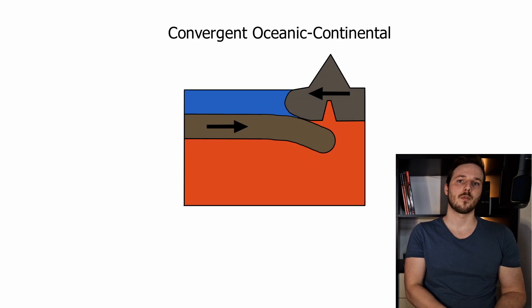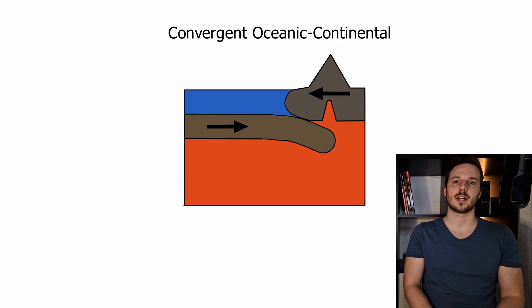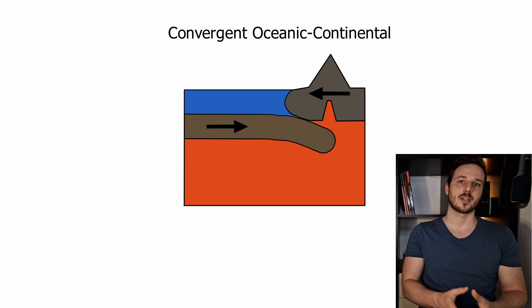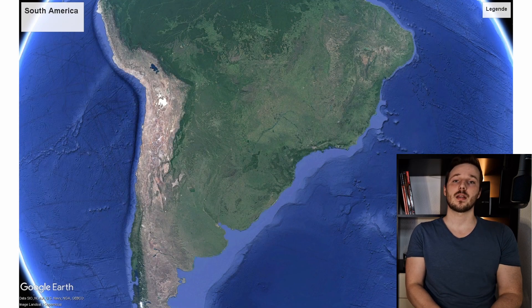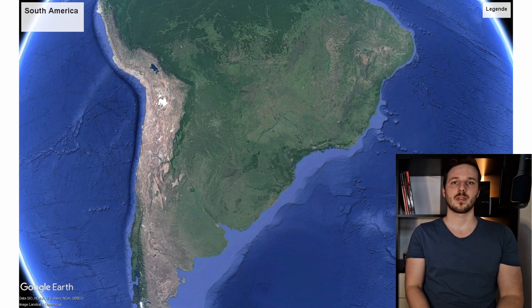Let's look at some specifics. We have a convergent movement of an oceanic and a continental plate, and the denser oceanic plate will be pushed beneath the continental plate, and volcanic activity is normal at these boundaries. That is what you see at the west side of South America.